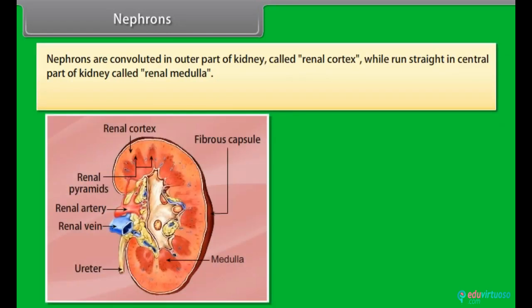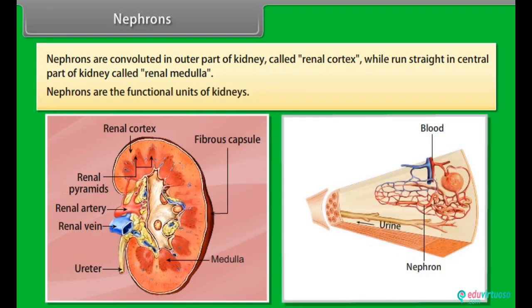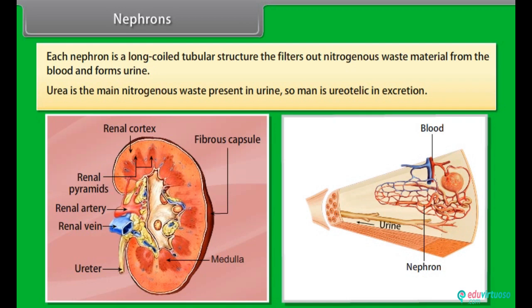Nephrons are convoluted in the outer part of the kidney called the renal cortex, while they run straight in the central part called the renal medulla. Nephrons are the functional units of kidneys. Each nephron is a long coiled tubular structure that filters out nitrogenous waste material from the blood and forms urine. Urea is the main nitrogenous waste present in urine, so humans are ureotelic in excretion.